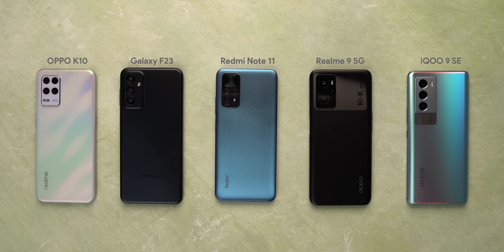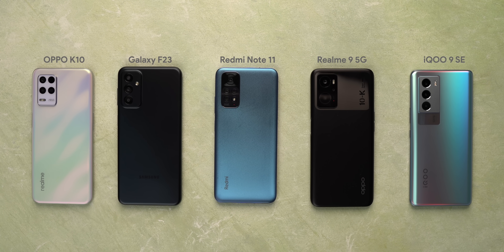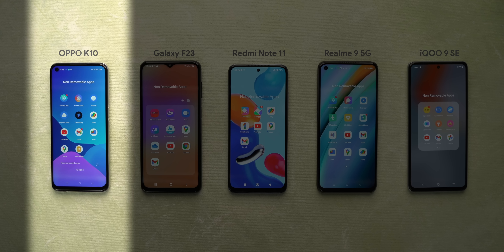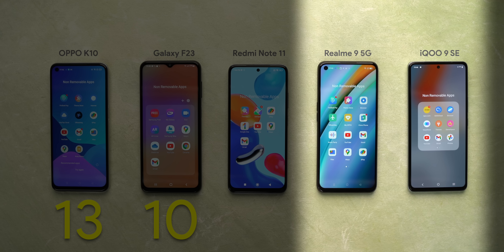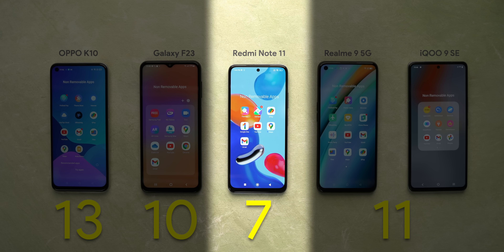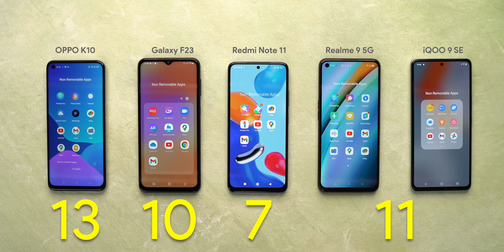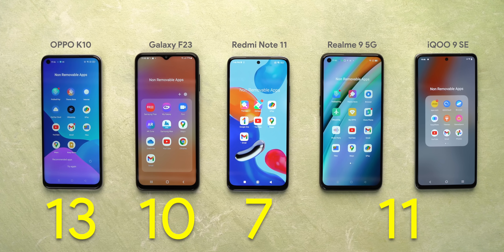While doing this test, we also got an idea of which phones have the most bloatware that can't be removed — and I'm talking about unnecessary apps, not things like clock, weather, messages, or the Play Store. The OPPO K10 has the most, with 13 bloatware apps that can't be uninstalled. The Galaxy F23 has 10 such apps. The Realme 9 5G and the iQOO 9 SE have 11. And the Redmi Note 11 is the best here with only 7 bloatware apps that can't be removed. You can remove these with the Universal Debloater tool, but this gives you an idea of which manufacturer puts in the most bloatware.